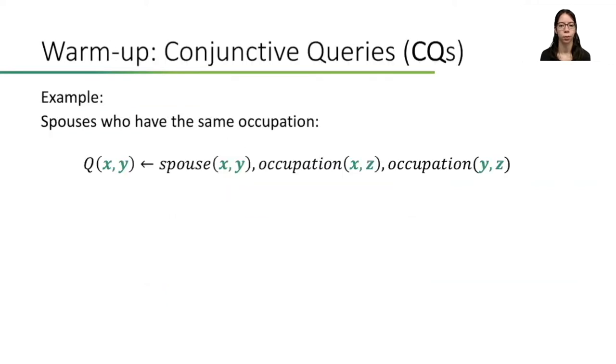Let's begin with conjunctive queries or short CQs. I will not formally define CQs but explain them with the following example asking for spouses who have the same occupation. The query here is named Q and will return X and Y if they meet the following constraints. First, Y must be the spouse of X and second, there must be some Z which is the occupation of X and the occupation of Y. We can represent this query graphically as a pattern to make it easier to understand. Here, all variables are denoted by nodes while the relations are represented by edges and their labels. In this graphical representation, I will denote output nodes with green color. So, our pattern here will output X and Y.